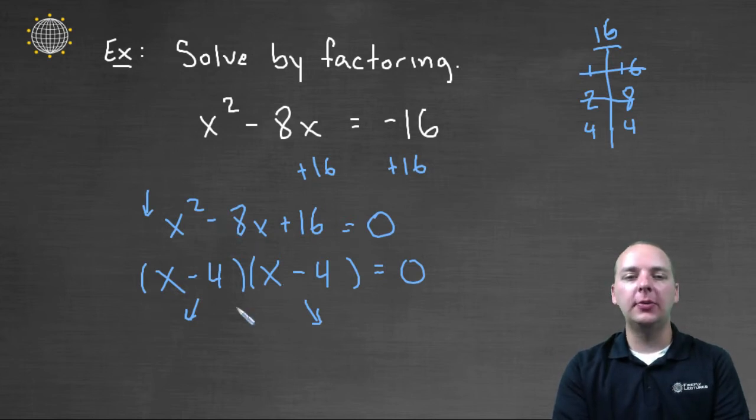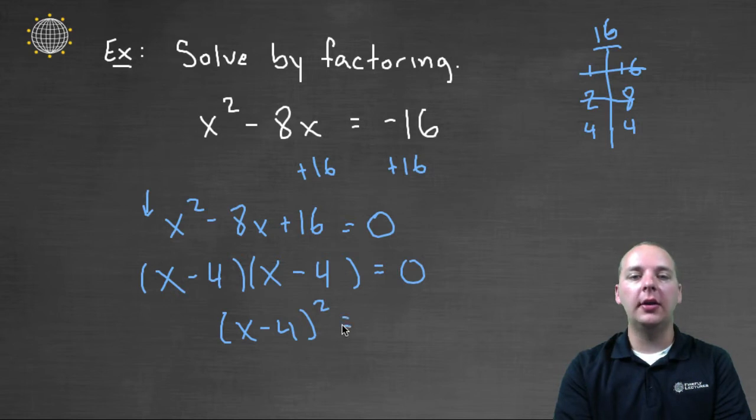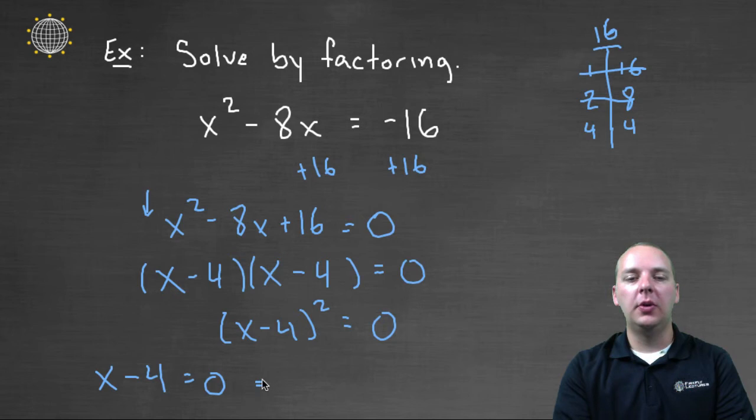Well it's the same factor, so you could actually think of this as x minus four quantity squared equals zero. So really we just have one factor, it's the same factor that we have to set equal to zero. So x minus four equals zero will give us x equals four.